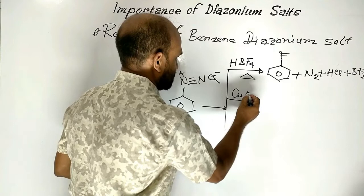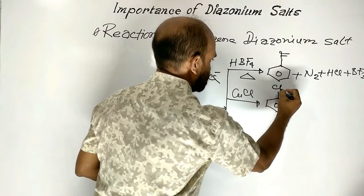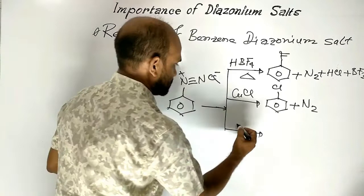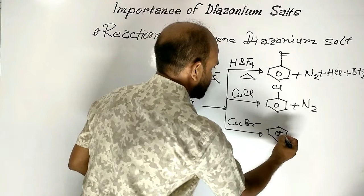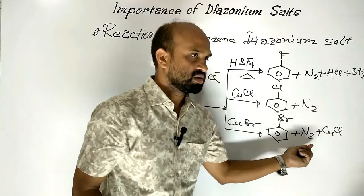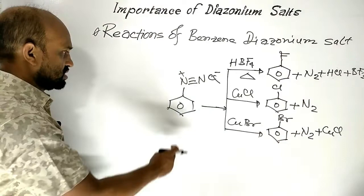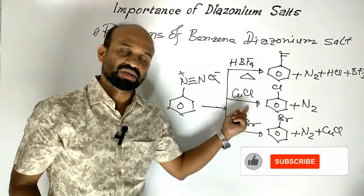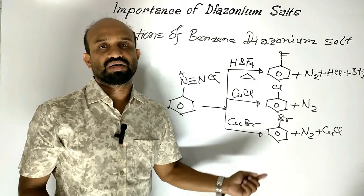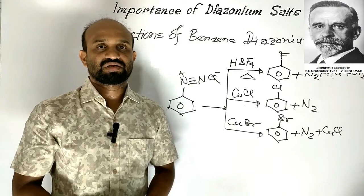When diazonium salt is treated with cuprous chloride (Cu⁺Cl), then chlorobenzene is obtained; nitrogen is a byproduct. When benzene diazonium chloride is treated with cuprous bromide (Cu⁺Br), then bromobenzene is obtained; byproducts are nitrogen and cuprous chloride. So when benzene diazonium salt is treated with cuprous chloride or cuprous bromide, chlorobenzene or bromobenzene is obtained. This reaction is known as the Sandmeyer reaction.